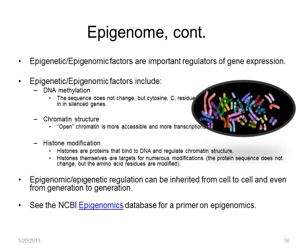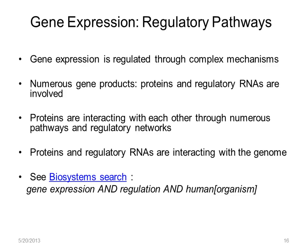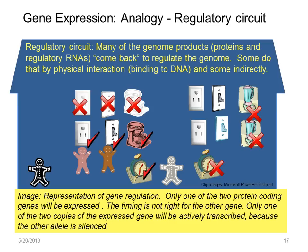Let's explore a bit more about regulation of gene expression. We'll continue with our analogy. The gist is that regulation occurs through complex pathways and regulatory networks. Numerous proteins are interacting with each other, and directly with DNA, to orchestrate the timing of expression for an individual gene. If you want to see some examples, try this search in the biosystems database. I will now return to our cell analogy, to the powerhouse, to see how this all fits together.